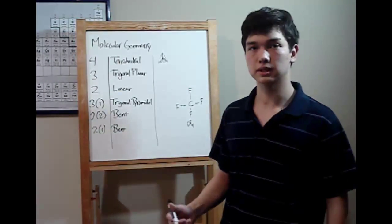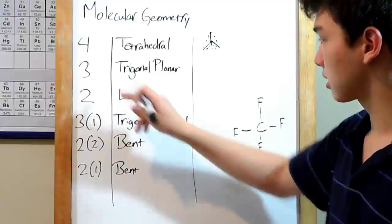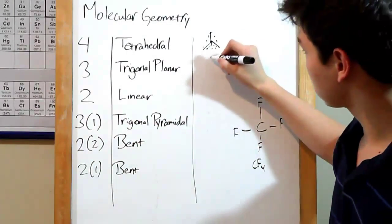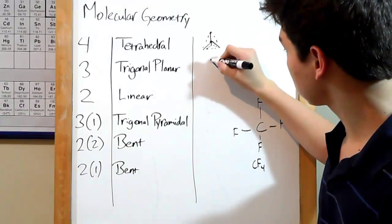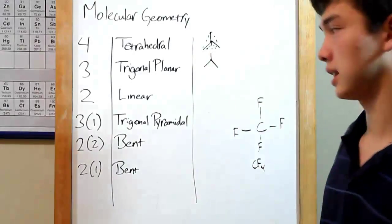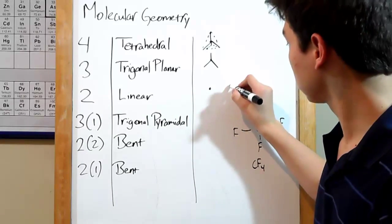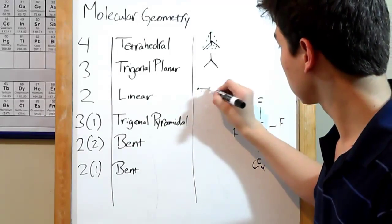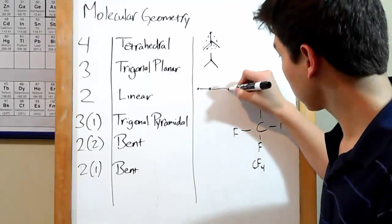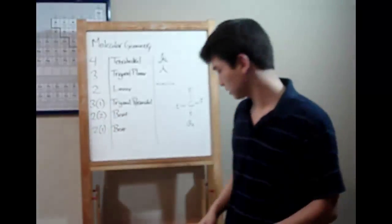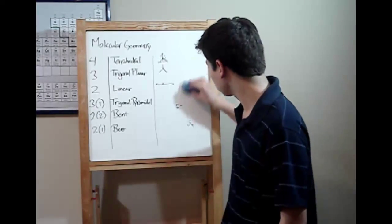There are a few other ones that you need to know about. When you've got three atoms surrounding the central one, you get a trigonal planar. That's a very simple two-dimensional kind of configuration, just like that. If you've got two atoms around the central one, you get a linear shape.